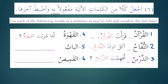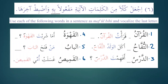Al-babu — fatahtu al-baba — I opened the door. Or: man fataha al-baba — who opened the door? Al-qamisu — the shirt — ghassalat ummi al-qamisa — my mother washed the shirt. Or ghassaltu al-qamisa — I washed the shirt — or labistu al-qamisa — I wore the shirt. If you know the verbs, inshallah, you can make the past tense and make sentences like this.